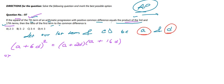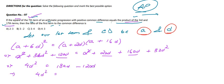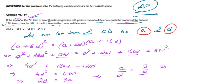Expanding the left side: a² + 12ad + 36d². Expanding the right side: a² + 18ad + 32d². Cancelling a² from both sides: 36d² - 32d² = 18ad - 12ad, which gives 4d² = 6ad. Dividing both sides by 2d, we get 2d = 3a, so a/d = 2/3.